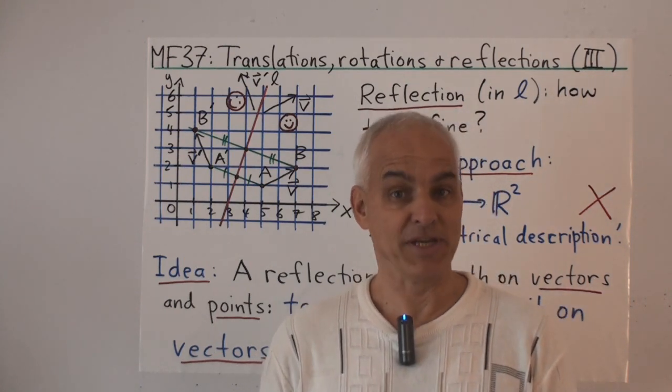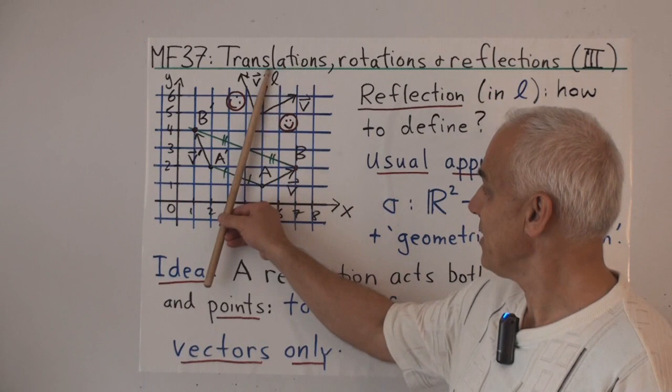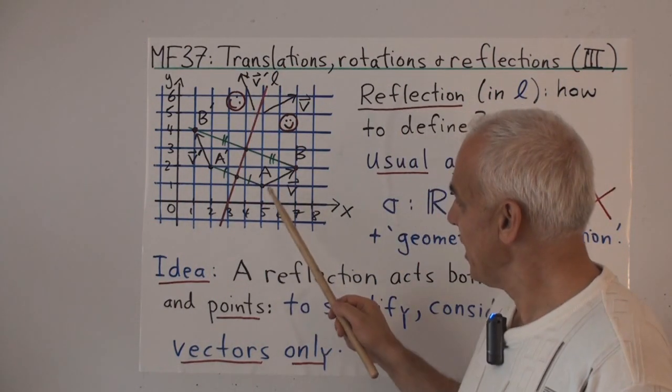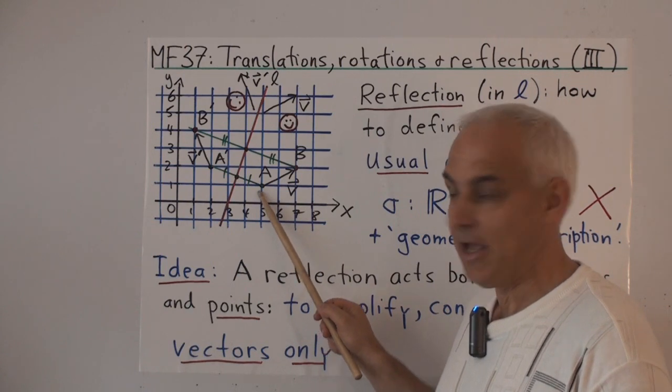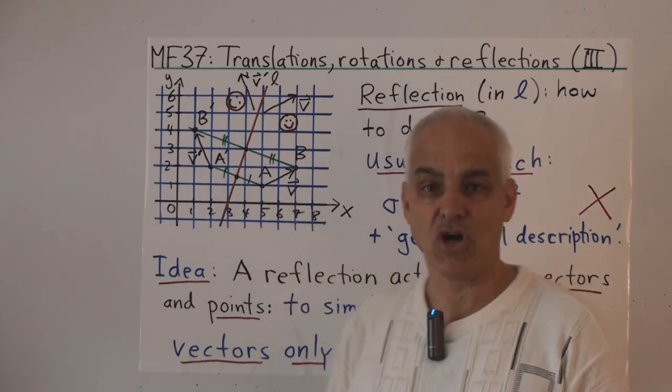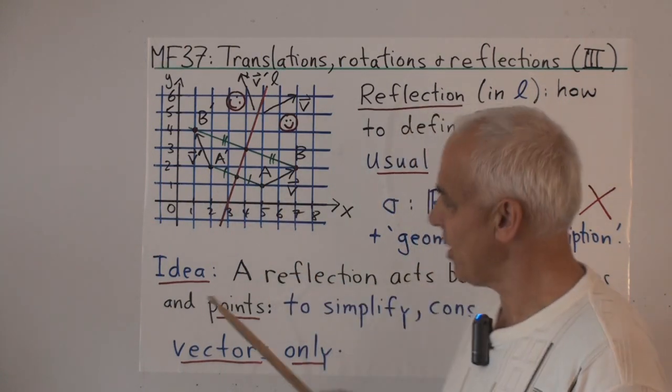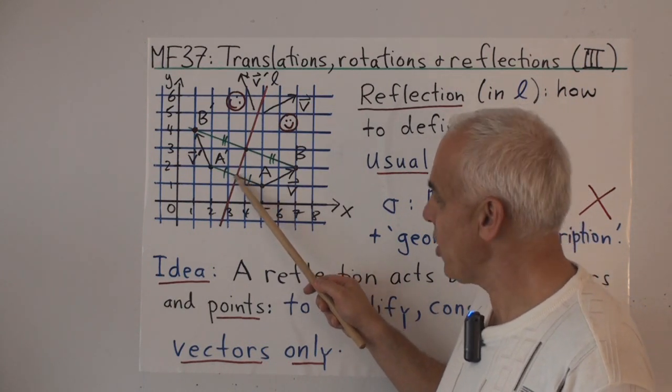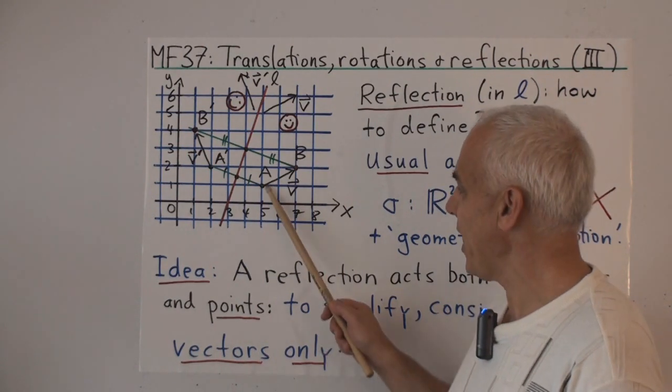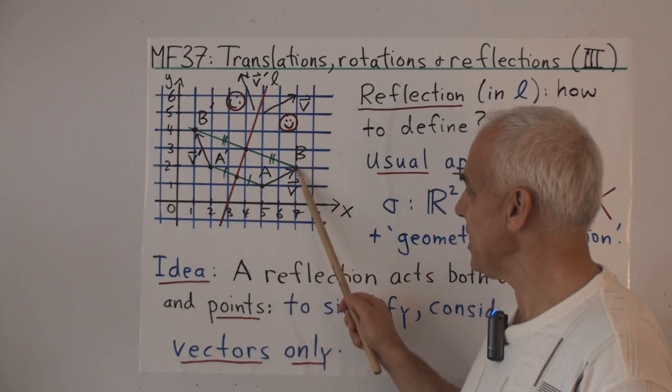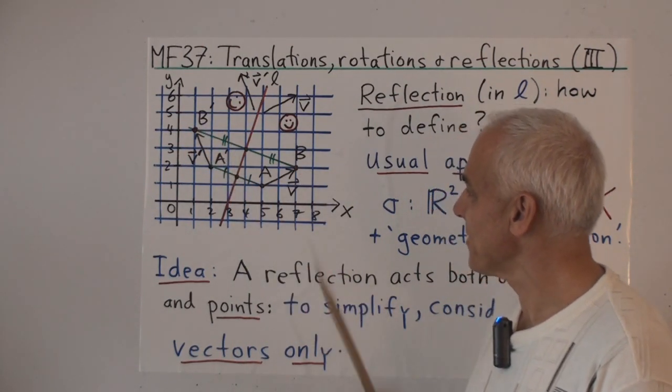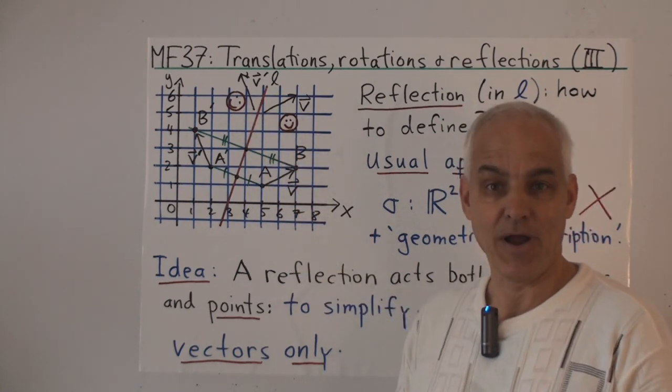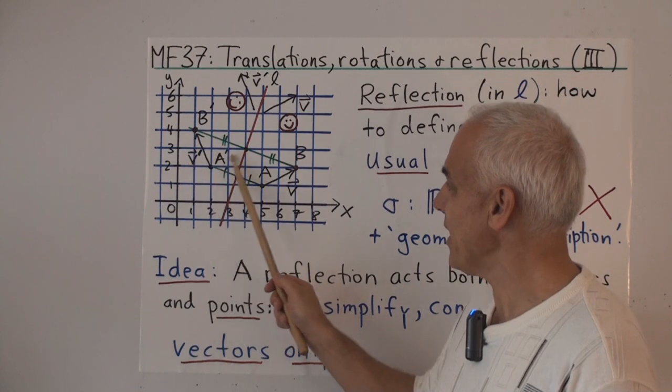Intuitively, the idea of a reflection is pretty simple. We have a line, say this line L, and what we mean by reflection is we have a point on one side and we're thinking of the mirror image on the other side. It means we go perpendicularly towards the line, and then we go an equal amount to the other side. So A goes to A', B goes to B', a little circle like this goes to a little circle like that, and so on. That's the reflection in the line L.